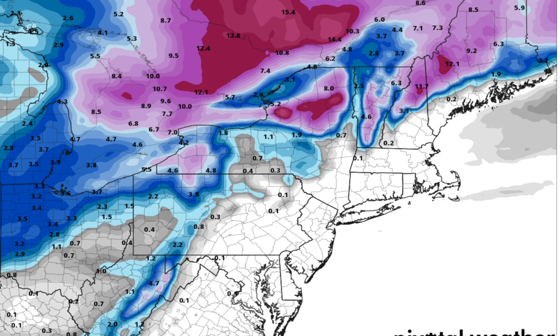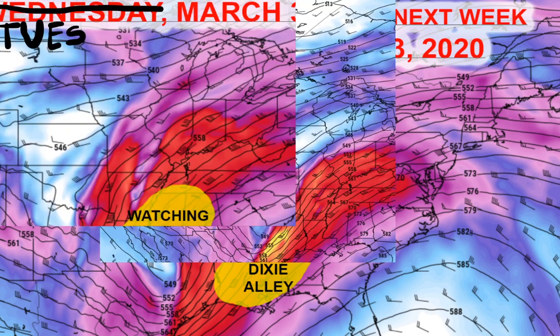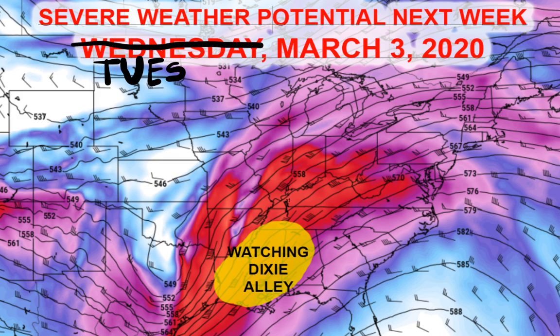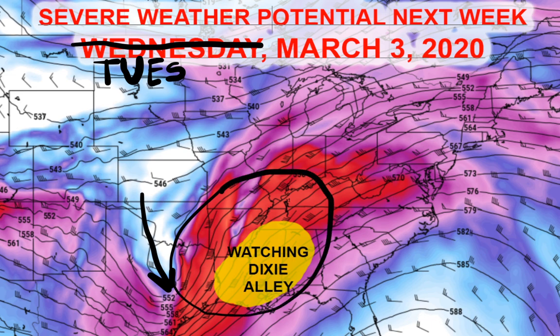Now let's talk about the potential for Dixie Alley severe weather that could impact the area next week. This is the target area I'm projecting, largely based on the European model, for Tuesday — Super Tuesday — which is going to be a big day for voting for the Democratic Party across several states. There could be a severe weather threat in portions of Dixie Alley. You can see a slight negative tilt to this potent trough digging into Dixie Alley, and a large warm sector with strong southwesterly winds — 50, 70, 80 knots at the mid-levels of the atmosphere overspreading that warm sector. There are some model discrepancies, and I'm going to show you the different evolutions of the upper-level storm system.